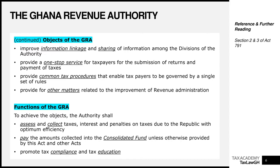The next function is to pay the amounts collected into the consolidated fund, unless a separate act directs otherwise. The consolidated fund is essentially Ghana's mother fund where different revenue sources are paid in for disbursement for national purposes. The GRA is also required to promote tax compliance and education in Ghana, ensuring taxpayers are aware of their rights, duties, and obligations under the various tax laws.